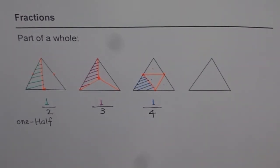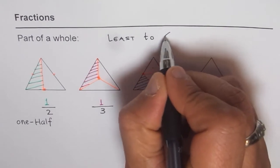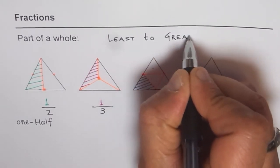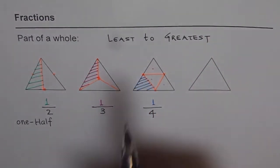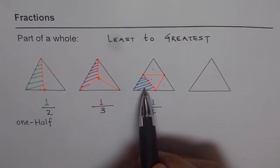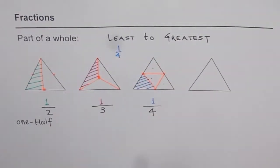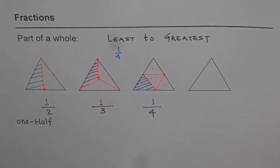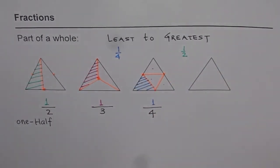Now, can you arrange these fractions from least to greatest? Least is minimum and greatest is maximum. Compare the shaded portions. The least is one out of four. The greatest is the green one, which is half. And in between, we have one third. Do you see that?